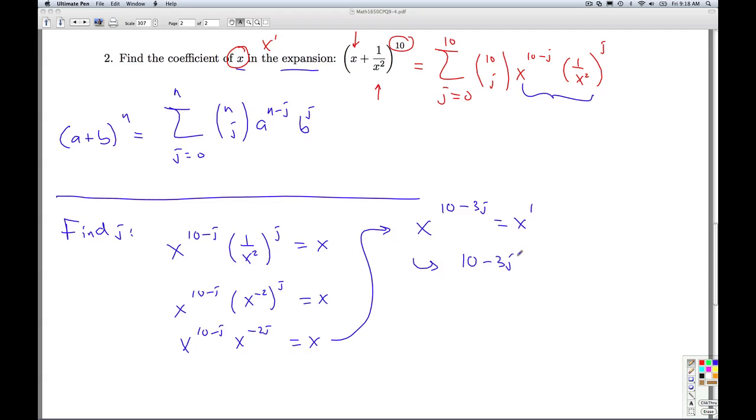Or in other words, 3j is equal to 9, which gives me j equals 3. Okay, so when this counter reaches 3, that's when it's going to spit out the x to the first term. All right?